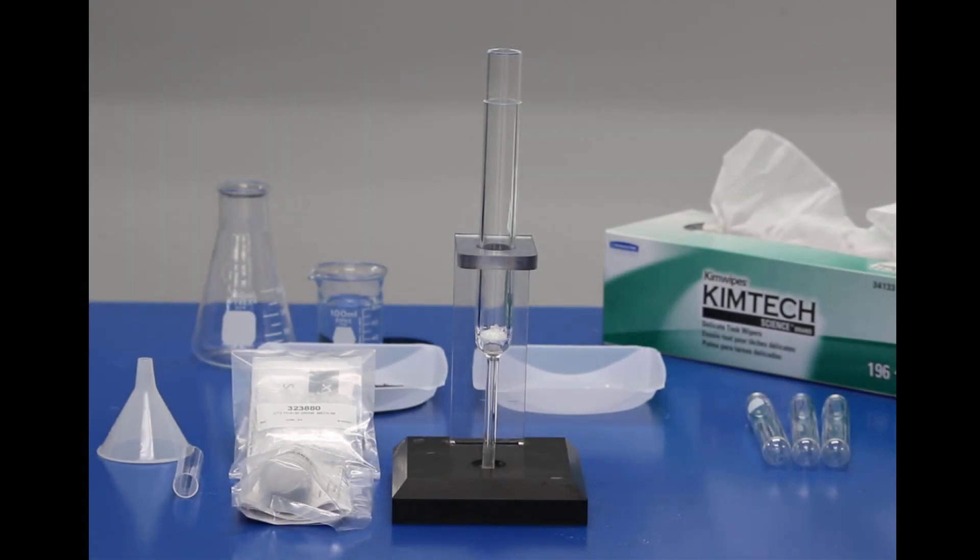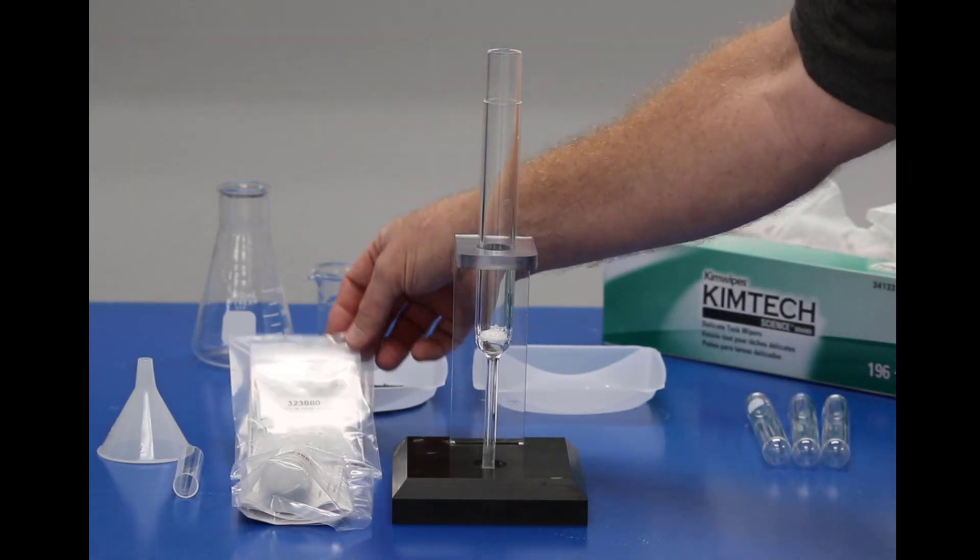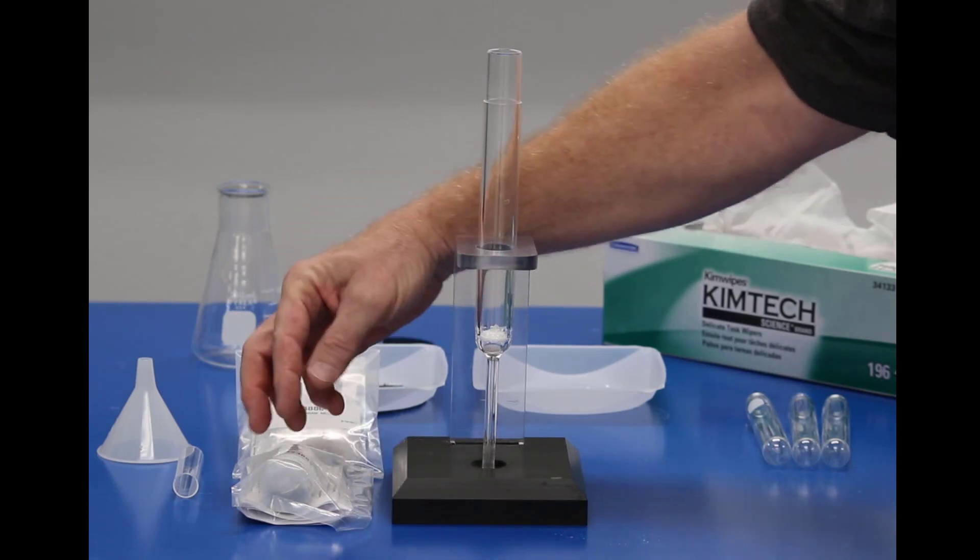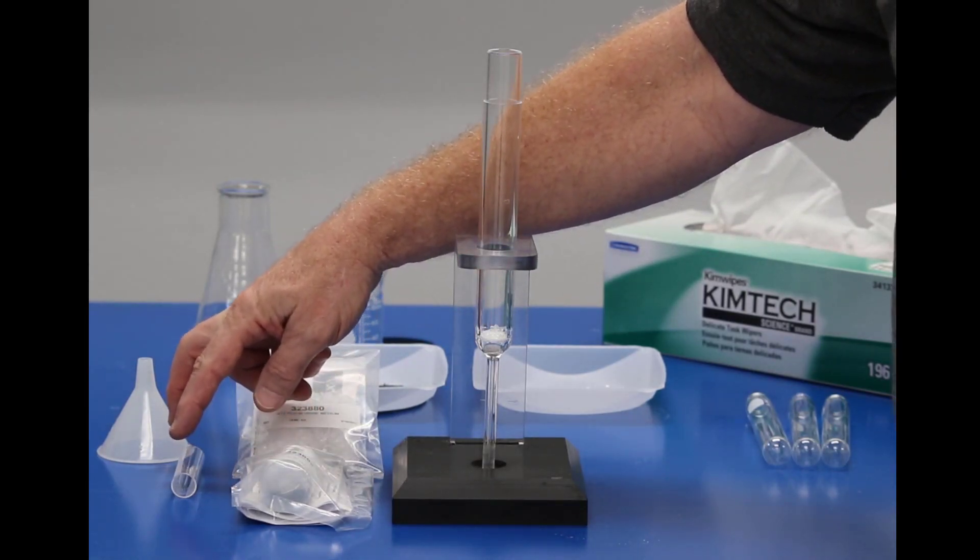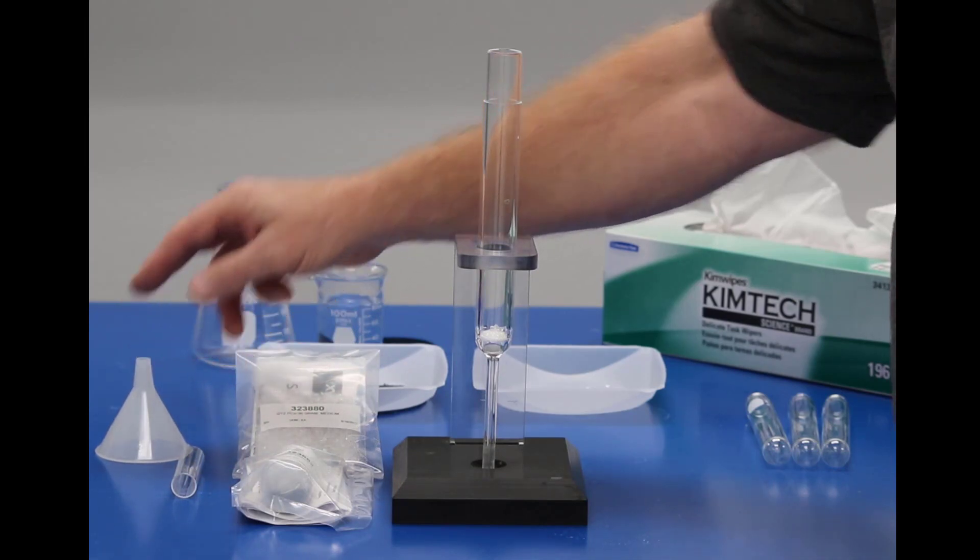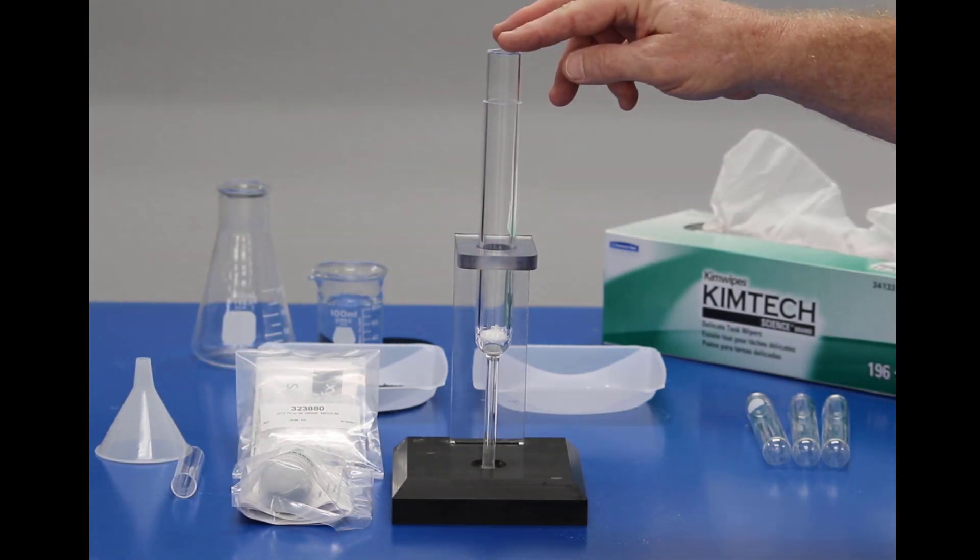I will now pack the combustion tube. In the startup kit you will find all of the material necessary for packing the tube, which includes quartz pieces, platinum catalyst, the combustion tube guard, funnel, and of course the combustion tube.